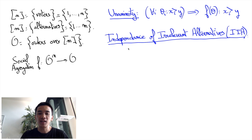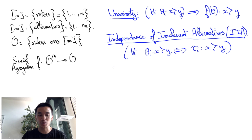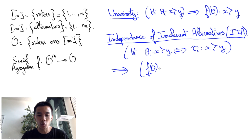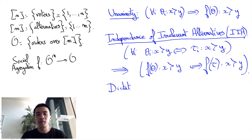It is independent of irrelevant alternatives — written IIA — when for all alternatives x and y in M and any preference profiles theta and tau in O^N, if theta_i says x is better than y whenever tau_i says so as well for all voters i in N, that is, any voter's preferences with respect to x and y is the same in theta and in tau, then the group preference F of theta with respect to x and y will be the same for theta and tau: F of theta says x is better than y if and only if F of tau says x is better than y.